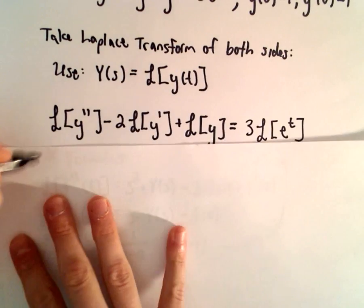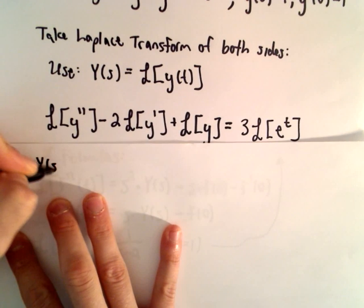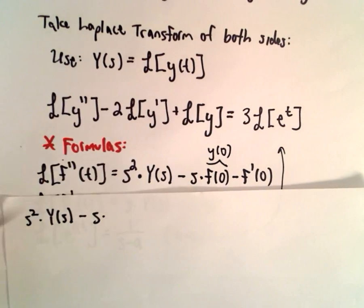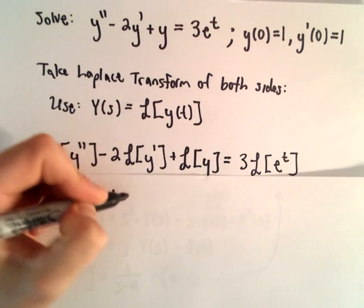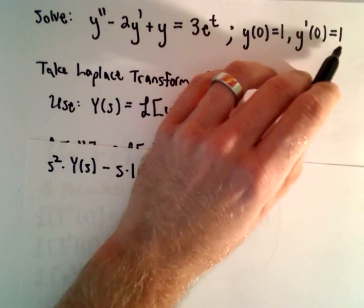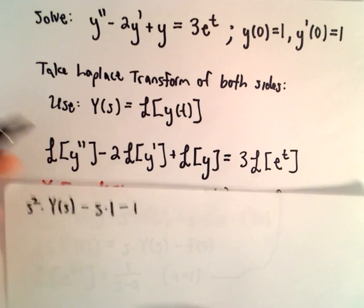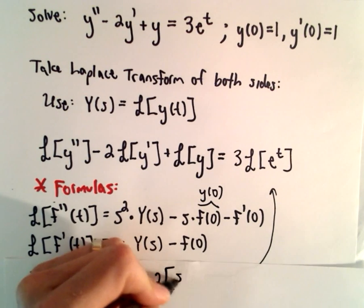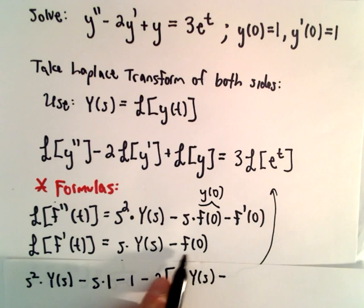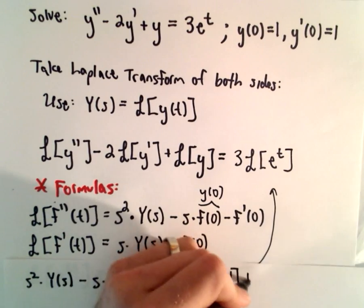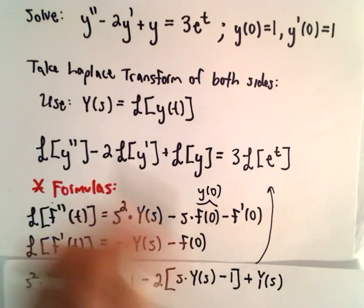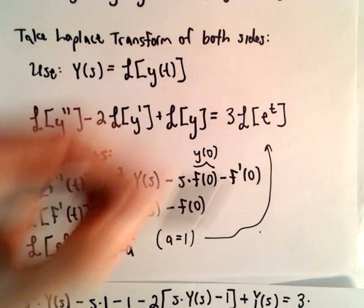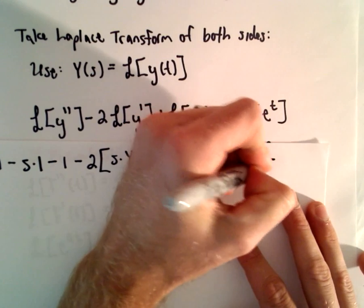Let me try to fit everything in here now. We would have s squared times Y of s minus s times y of 0 — our initial condition y of 0 was equal to 1 — minus y prime of 0, which is also 1. Then we'll have minus 2 times the Laplace transform of y prime, which gives s times Y of s minus y of 0, which is just 1. Plus the Laplace transform of y, written as capital Y of s. And then using the Laplace transform of e to the t with a equals 1, we'll be left with 1 over s minus 1.